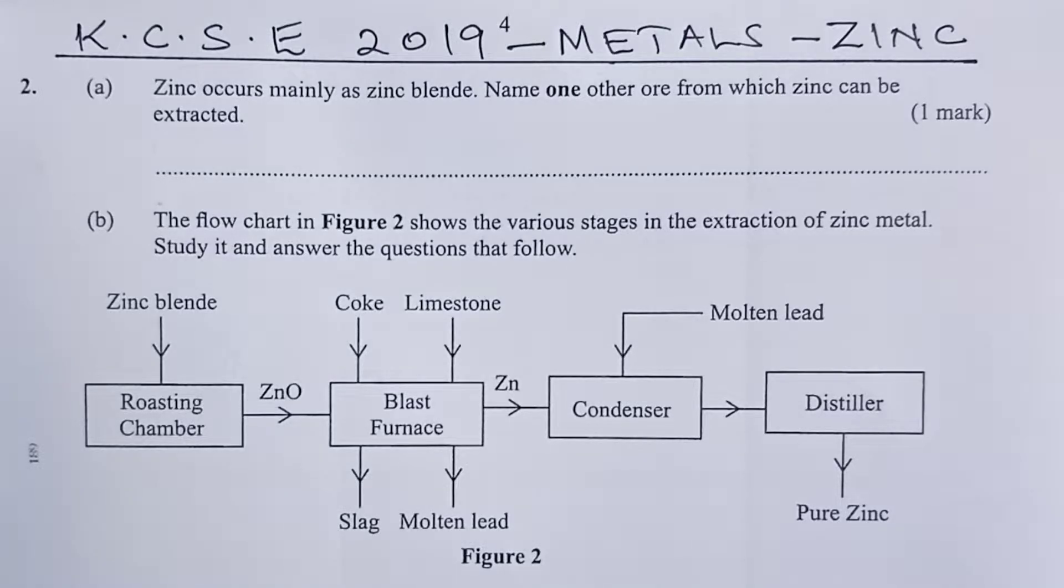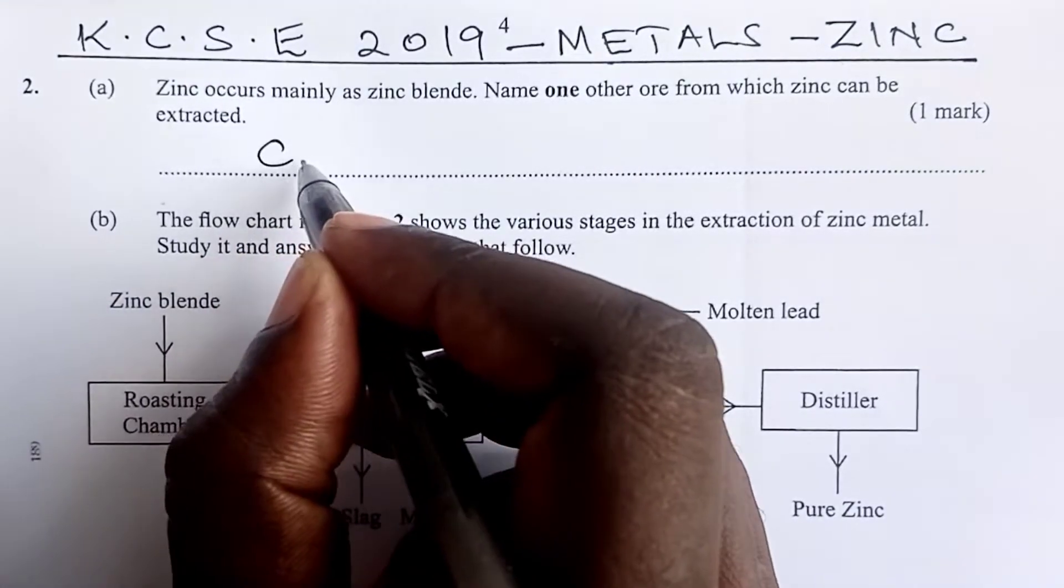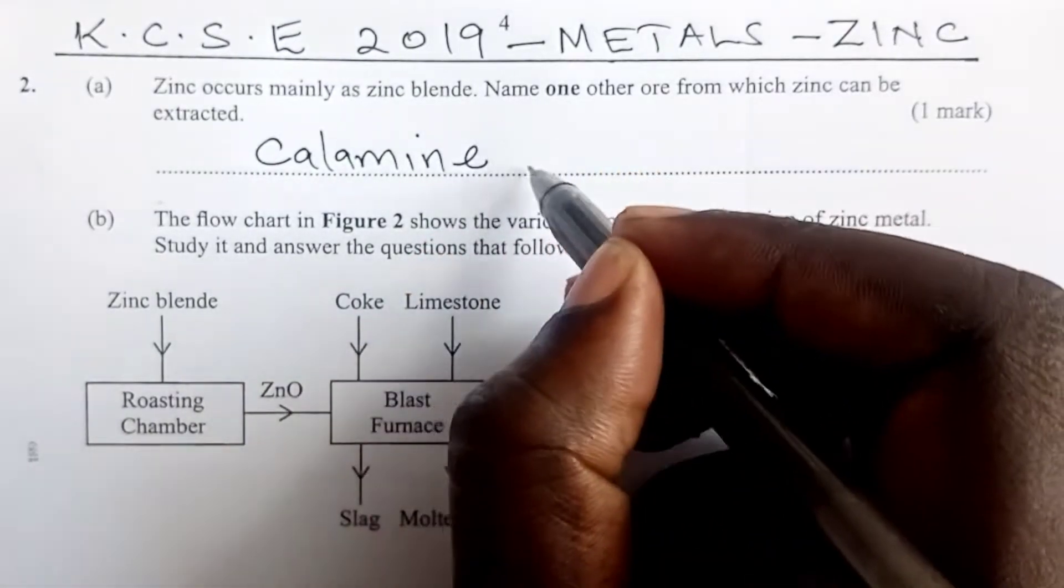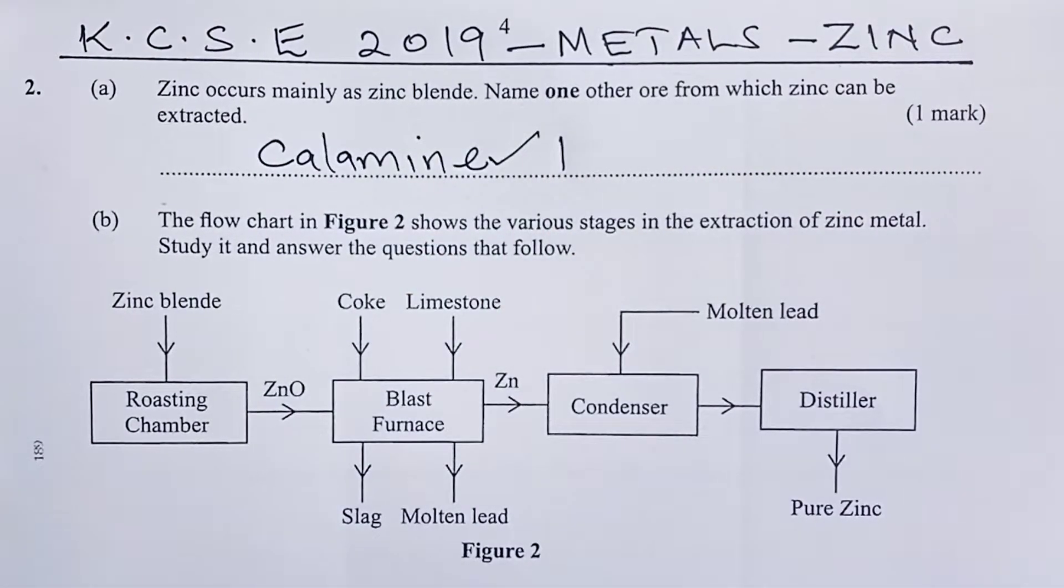Zinc occurs mainly as zinc blend. Name one other ore from which zinc is extracted. The answer here is calamine for one mark. Part B.